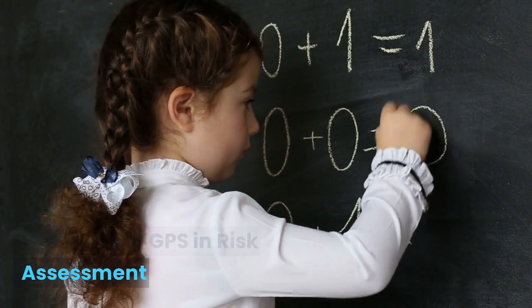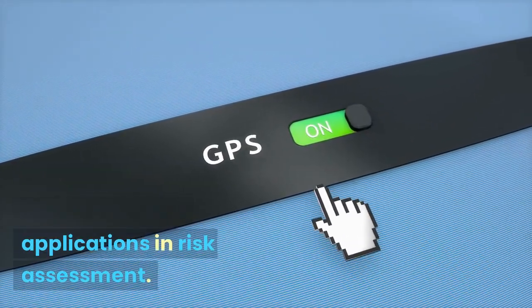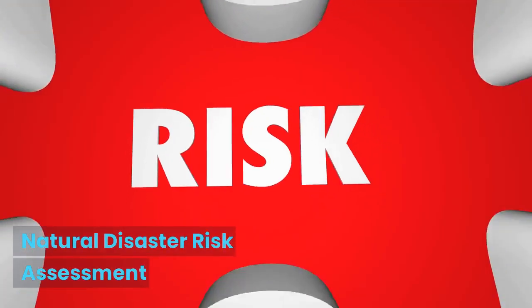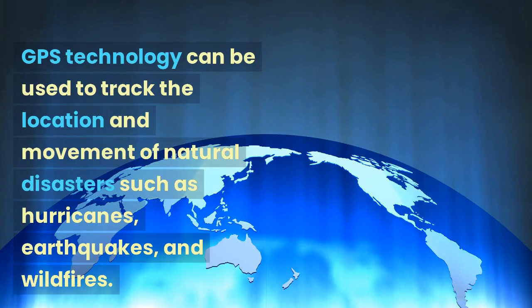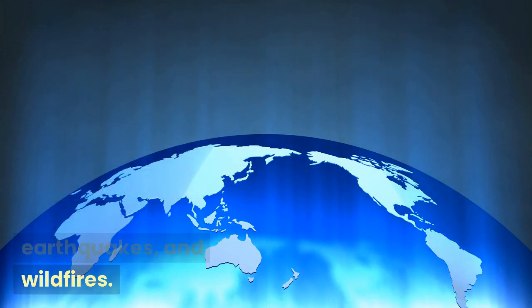Let us look at some examples of GPS applications in Risk Assessment. Natural Disaster Risk Assessment. GPS technology can be used to track the location and movement of natural disasters such as hurricanes, earthquakes, and wildfires.